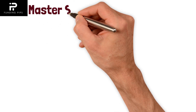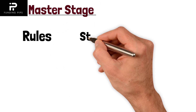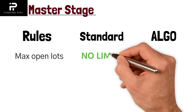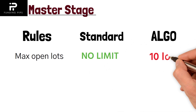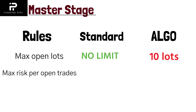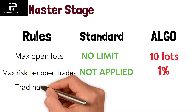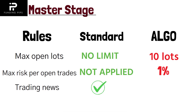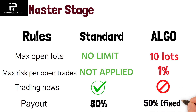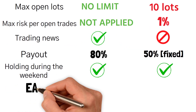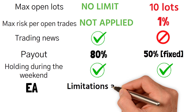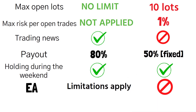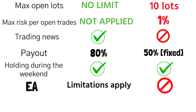Now let's look at the funded Master stage. In the Standard account, there is no limit on maximum open lots, whereas in Algo the maximum is 10 lots. Risk per open trade is not restricted in Standard, but in Algo you cannot risk more than 1% in a single trade. Trading the news is allowed in Standard but not allowed in Algo at the funded stage. Payout is 80% in Standard, whereas in Algo it is fixed at 50%. Weekend holding is allowed in both. For Expert Advisors, there are some limitations in Standard, and in Algo EAs are not allowed at the funded stage — though they were allowed during the challenge.